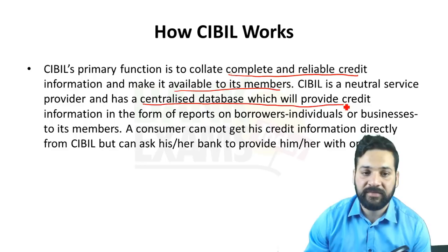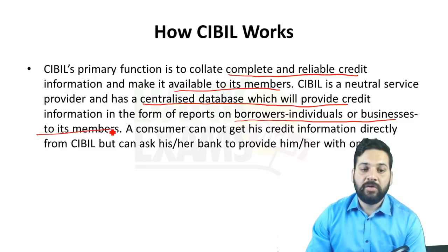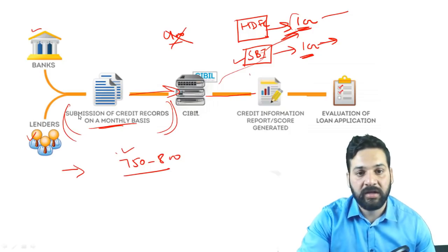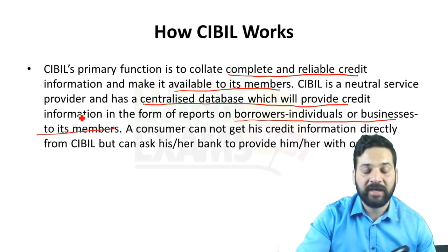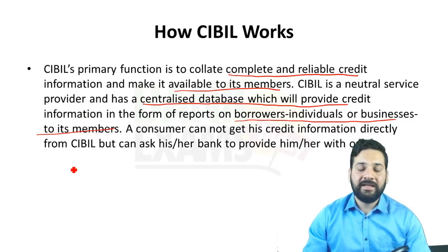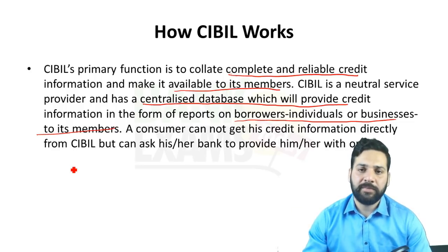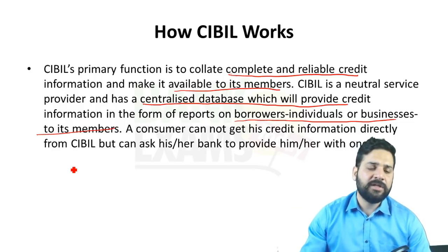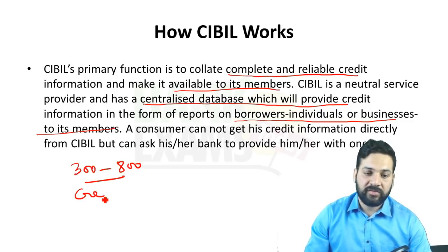CIBIL provides credit information in the form of reports on borrowers — both individuals and businesses — to its members. It gives credit scores not just to individual borrowers but also to separate legal entities like public limited companies and private limited companies. The credit scores range from 300 to 800.